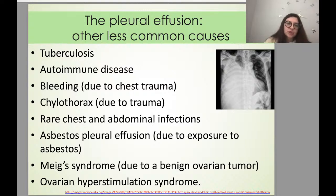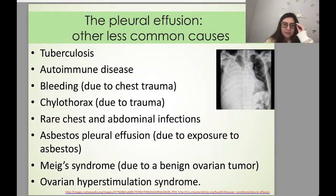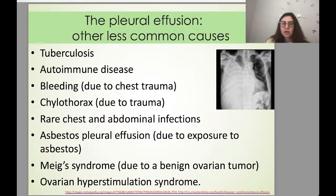Other less common causes of pleural effusion include tuberculosis, autoimmune disease, bleeding due to chest trauma, chylothorax due to trauma, rare chest and abdominal infections, asbestos-related pleural effusion, Meigs' syndrome due to benign ovarian tumor, and ovarian hyperstimulation syndrome.